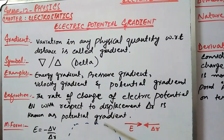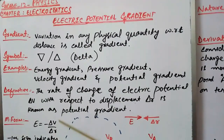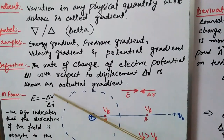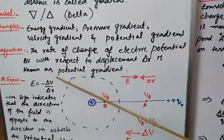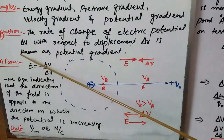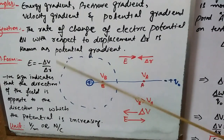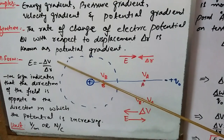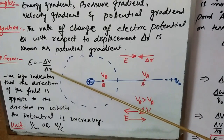Mathematically, potential gradient is represented by ΔV over Δr. The formula shown here represents the relationship between electric field and potential gradient, and the symbol of potential gradient is ΔV over Δr.